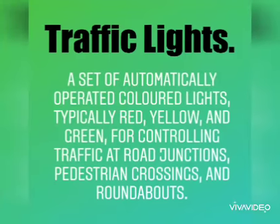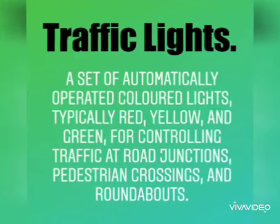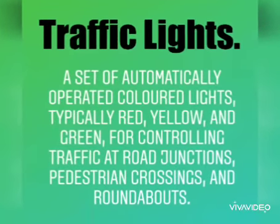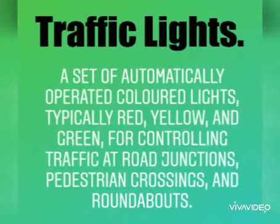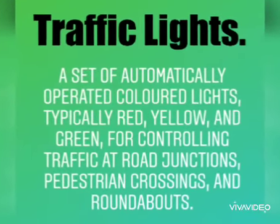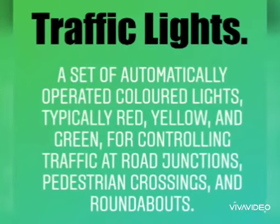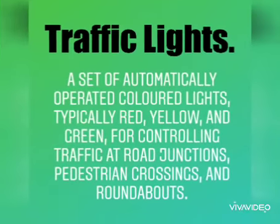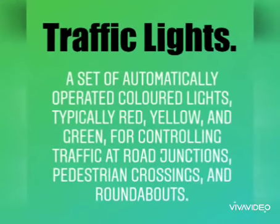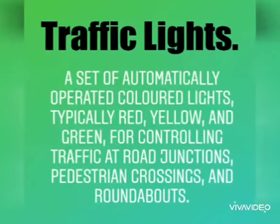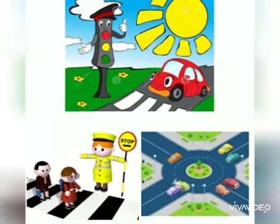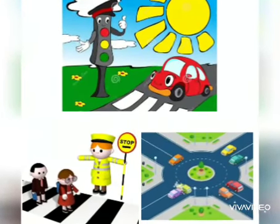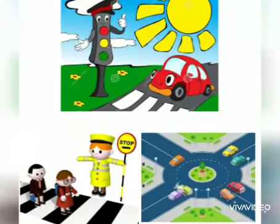Traffic lights: a set of automatically operated colored lights, typically red, yellow and green, for controlling traffic at road junctions, pedestrian crossings and roundabouts. Let's have a look — road junctions, pedestrian crossings and roundabouts.